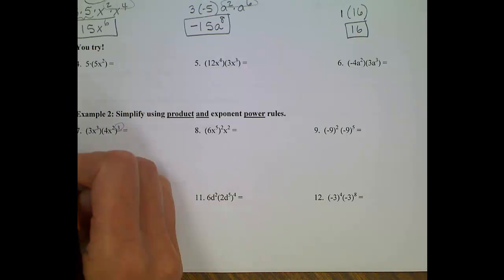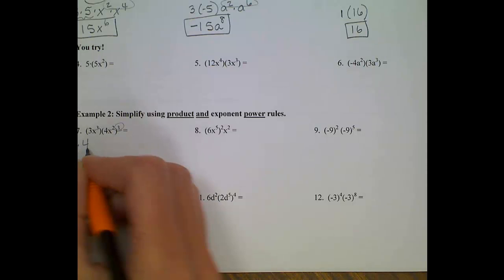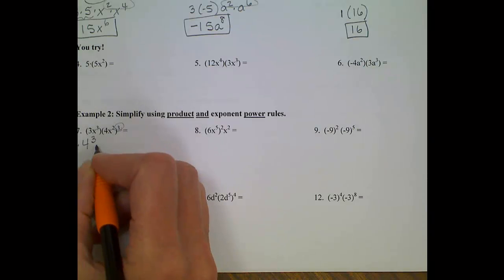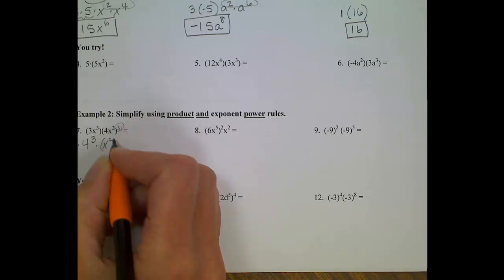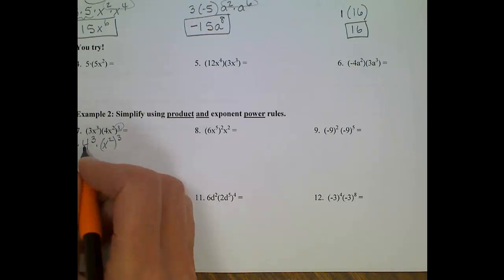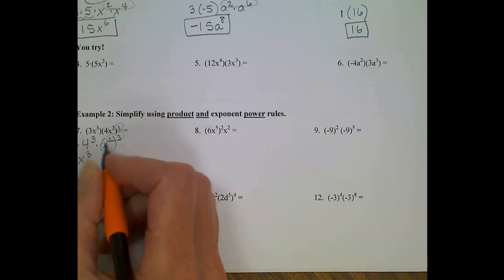So I'm going to take care of that 3 first. I'm going to bring down my 3x cubed, so I don't lose sight of it. And then I'm going to raise 4 to the 3rd power, because that 3 on the outside belongs to every single term on the inside. So I have 4 to the 3rd times x squared to the 3rd. I'm going to group them together, put my 3 and my 4 to the 3rd together. Bring down my x cubed, and evaluate my x squared raised to the 3rd. When we have a power to a power, we need to multiply them. So we'll get 2 times 3 will give us an x to the 6th.